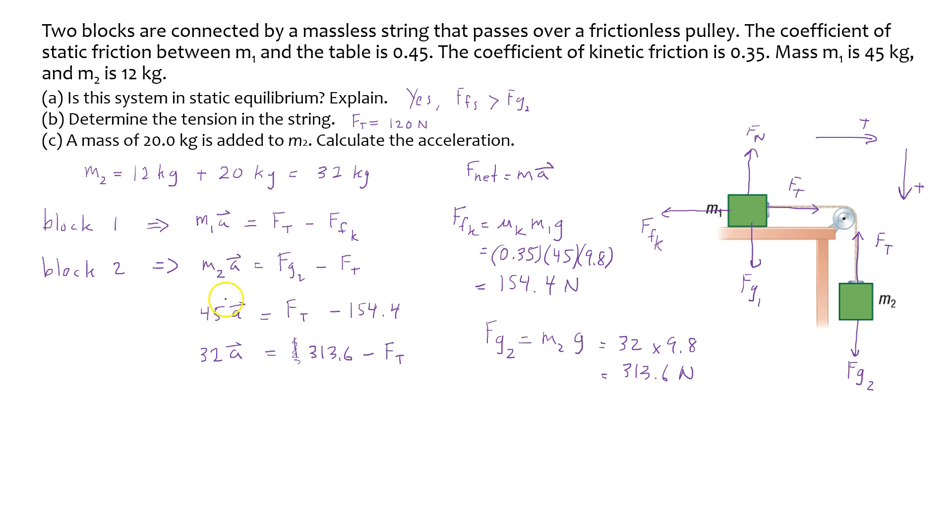Now we have a system of equations with two unknowns and two equations. I can eliminate Ft. If I add these two equations, since here I have positive Ft and here negative Ft, adding them will cancel the Ft. Adding these together, I get 77A equals 313.6 minus 154.4, so 77A equals 159.25.